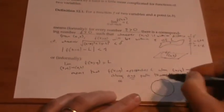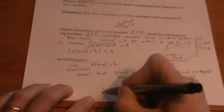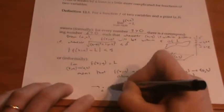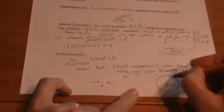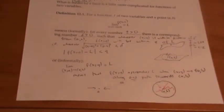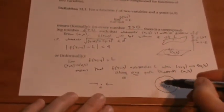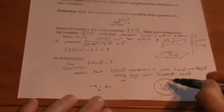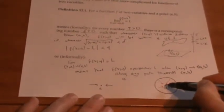In one dimension, x could just approach a from two directions: left and right. But in two dimensions, we have many options for approaching (a, b) — we can approach from any direction and also along curvy and wiggly paths. For the limit to exist and equal L, we need to approach the same number L no matter how we approach the point (a, b).